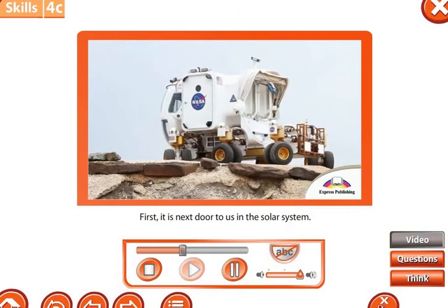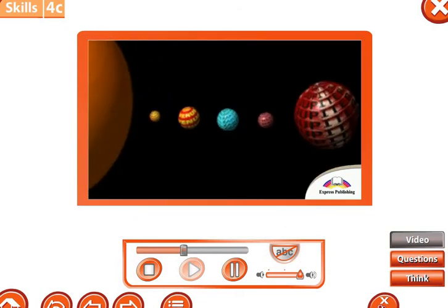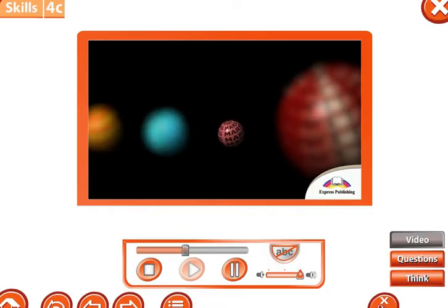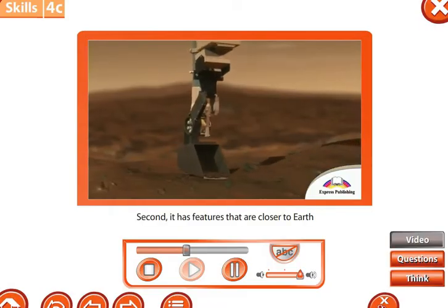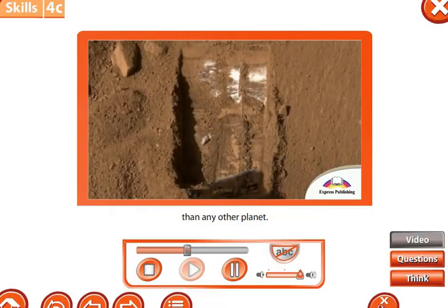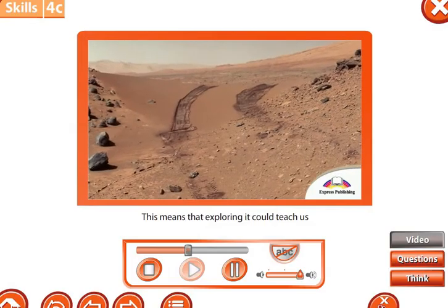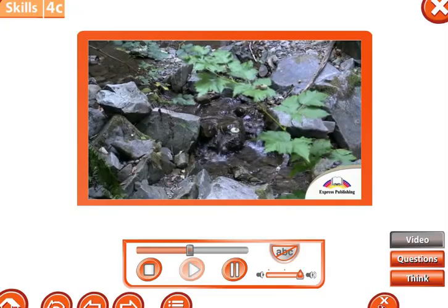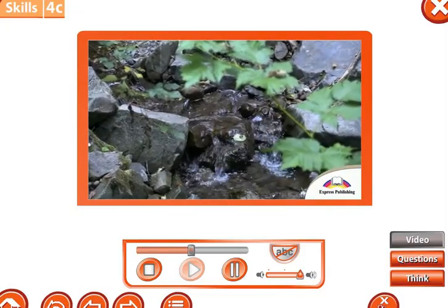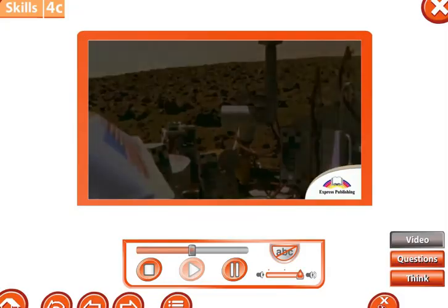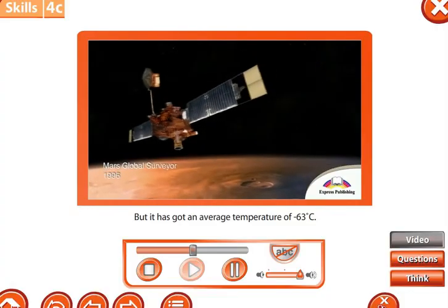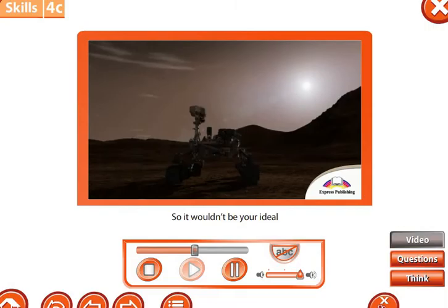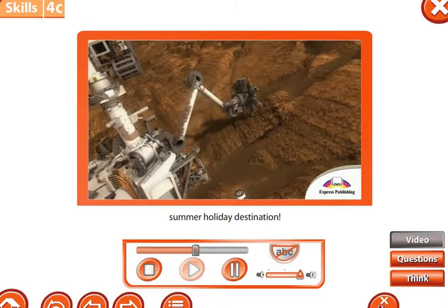But why are scientists so interested in exploring Mars? First, it is next door to us in the solar system. It is actually the fourth planet from the Sun. Second, it has features that are closer to Earth than any other planet. This means that exploring it could teach us a lot about our history and future. Did you know that Mars has got seasons too, just like Earth, but it has got an average temperature of minus 63 degrees?